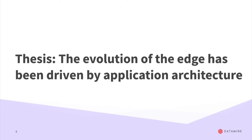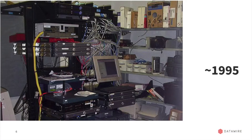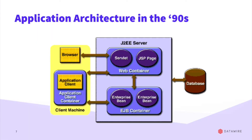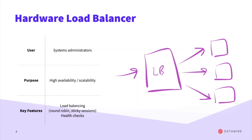The thesis is that the evolution of the edge has been driven by application architecture over the past 25 years or so. Think back to 1995 — J2EE, Java monolithic applications. Back in the 90s, we weren't even sure if the web browser was going to be the delivery mechanism. Fundamentally, it was a client-server type architecture with a database in the back end.